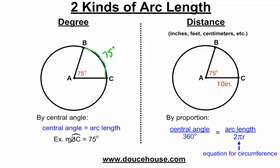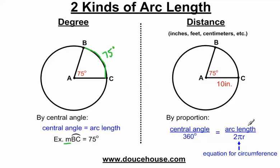Whenever you're talking about degrees, you're going to say 'the measure of.' You don't really refer to it as arc length, but this isn't very practical. You're not going to hear anybody talking about going 75 degrees around a circle — you're going to hear people talking about going 6 inches or 14 feet or 3 centimeters around the circle. People can relate to inches, feet, and centimeters more than degrees. To define the arc length from B to C, you need to know the central angle and you need to know the radius of the circle. If you know both of these values, then you can set up a proportion, cross multiply, and find the arc length.